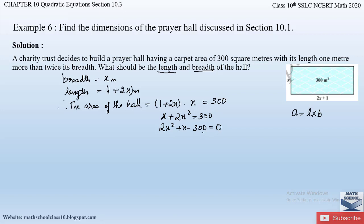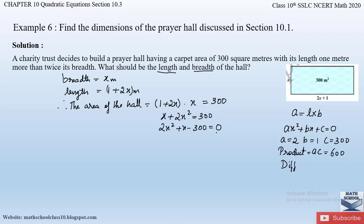Let us find the roots using the factorization method — splitting the middle term. Comparing 2x² + x - 300 = 0 with Ax² + Bx + C = 0, we get A = 2, B = 1, and C = -300. The product is AC = 2 × 300 = 600. Since the sign of C is minus, we take the difference, and the difference must equal B = 1.